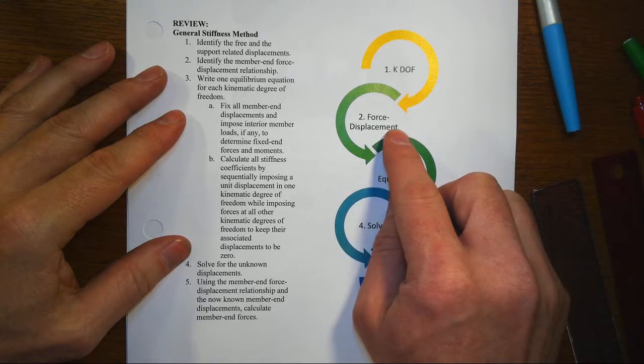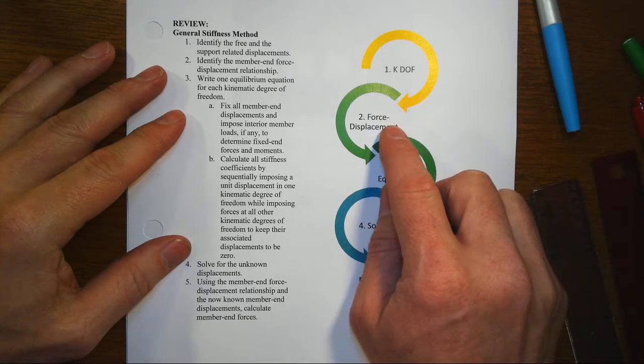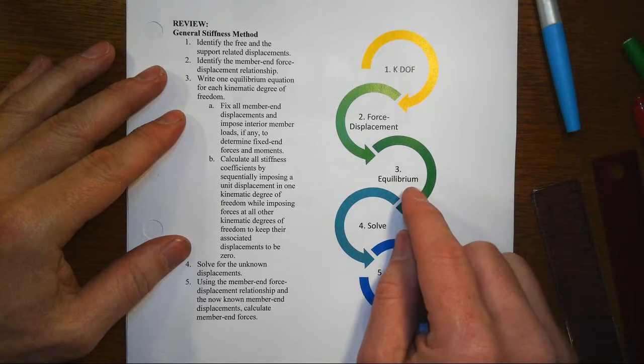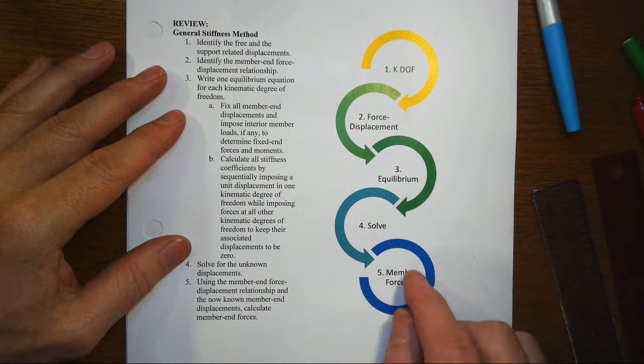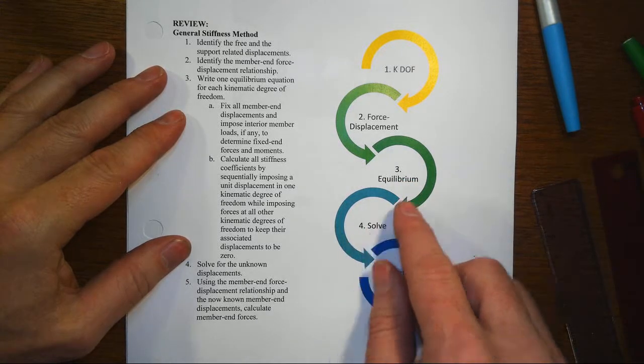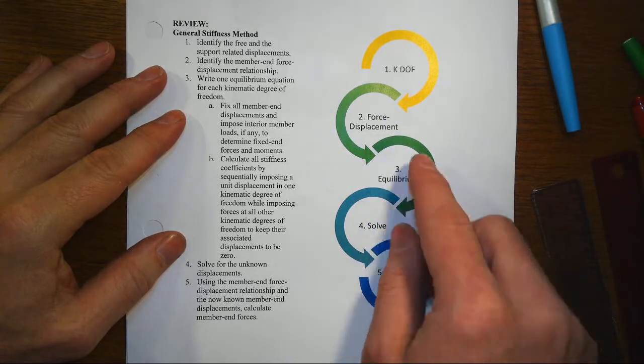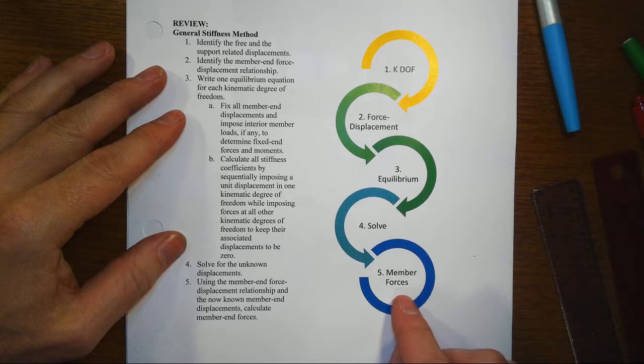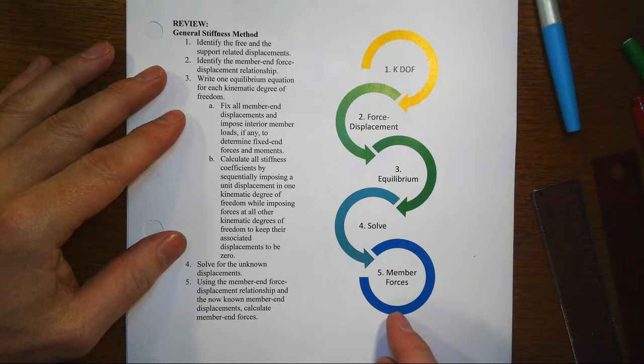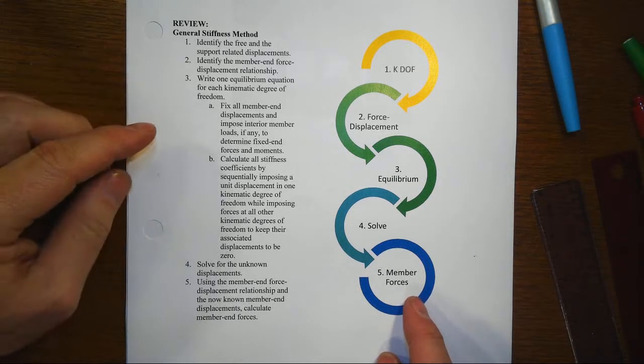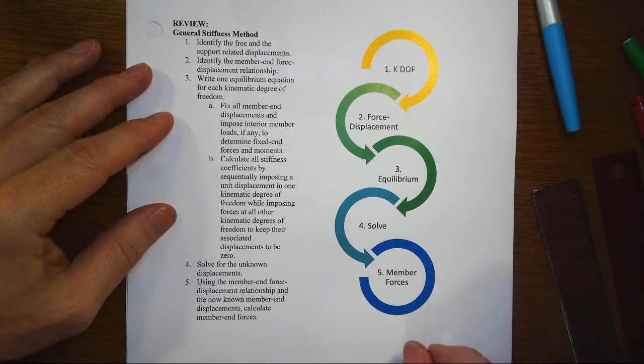We'll identify the force-displacement relationships that we're going to be using for the members or elements in the model. We'll write equilibrium equations, solve for these unknown displacements, and then back substitute into force-displacement equations to get member forces and then maybe some additional post-processing to get to other response quantities of interest.